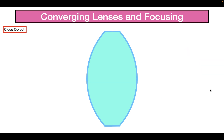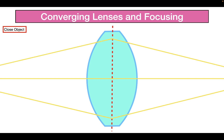Now what if we take the object and move it closer to the lens? The light rays would not be parallel to each other — instead they come into the lens at an angle. When they come in at an angle, it's harder for the lens to focus the light rays together. As a result, the point where the light rays converge is further away when the object is moved closer to the lens.